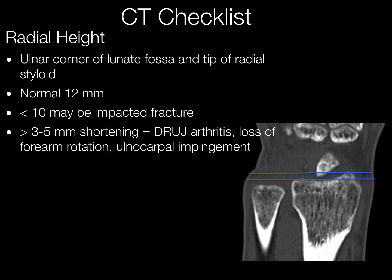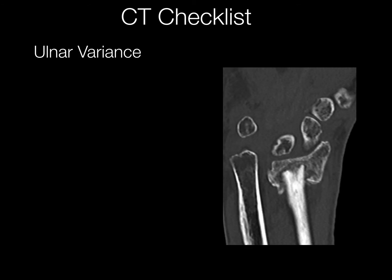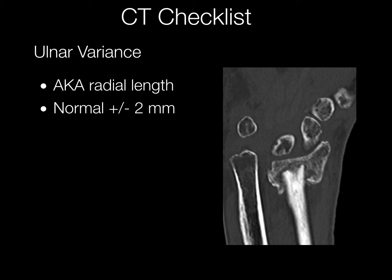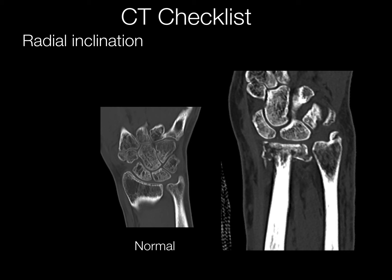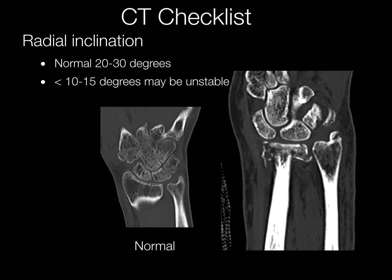If radial height shortens greater than 3 to 5 millimeters, you can end up with DRUJ arthritis, loss of forearm rotation, and ulnar carpal impingement. Ulnar variance is helpful for determination of radial length, and it normally is neutral, but can be plus or minus 1 to 2 millimeters. Radial inclination can be determined in the coronal plane. Normally the distal radius is inclined towards the ulna at about 20 to 30 degrees. Less than 10 to 15 degrees may be unstable.